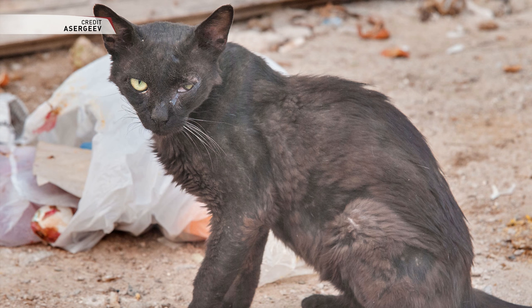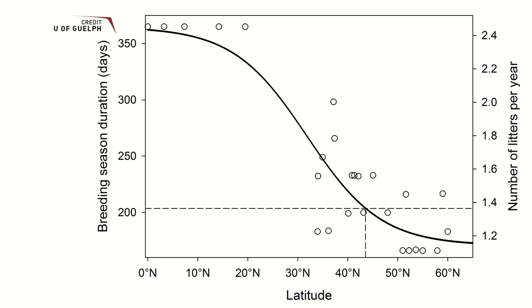The model uses data on survival rates and sterilization rates of the different cat categories, and calculates fecundity — the breeding rate — for female cats in each population. It uses data on adoption rates and abandonment rates to judge how cats transition between populations, and it even takes into account the changing length of cat breeding seasons across different latitudes.